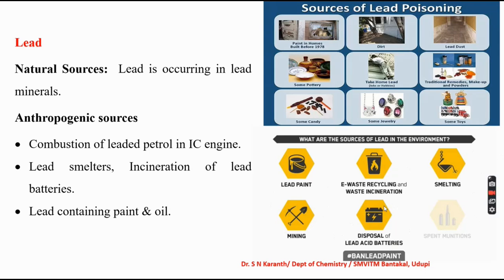Lead-containing paints and oils — particularly yellow paint made from chromate components — enter into the atmosphere and cause health hazards. E-waste recycling and waste incineration through continuous heating processes also release lead into the atmosphere. The main sources of lead are: lead paint, combustion of leaded petrol in internal combustion engines, lead smelters, incineration of lead batteries, lead paints, batteries, and mining.